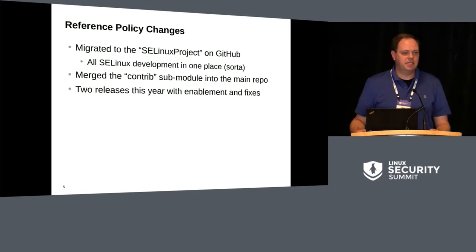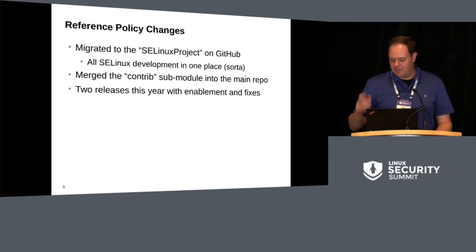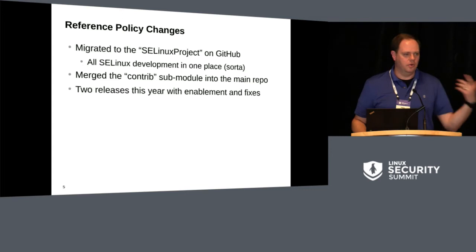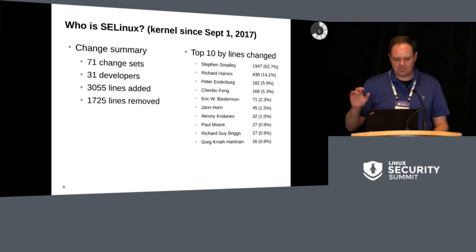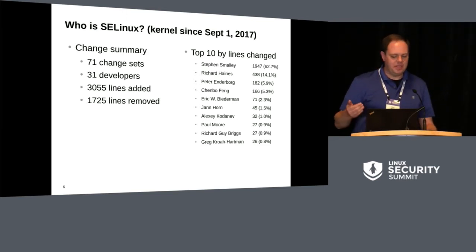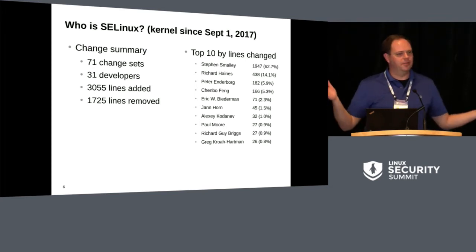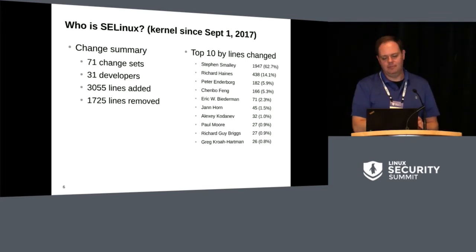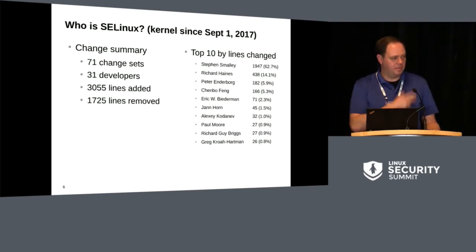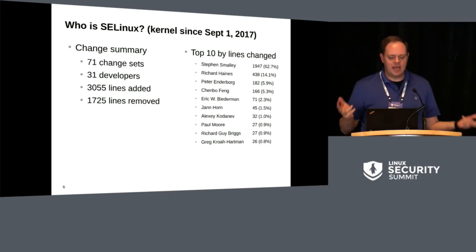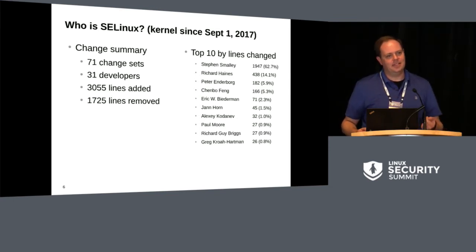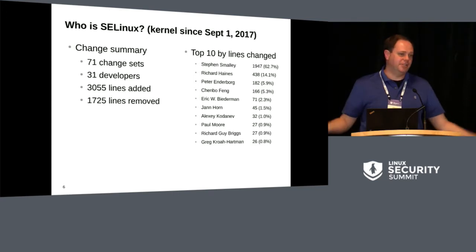Two reference policy releases this year — lots of changes, way more than I can get into in the few minutes I have left. Most of it's centered around enablement of newer versions of software and fixes. These are basically all the kernel changes since September 1st, 2017 — so roughly the last year. In the kernel, we had 71 changesets merged. We added roughly 3,000 lines and took out about 1,700. You can see the top 10 SELinux kernel developers over the past year based on lines changed.